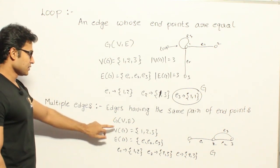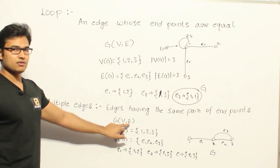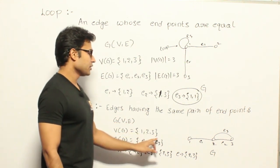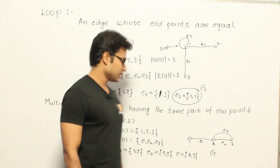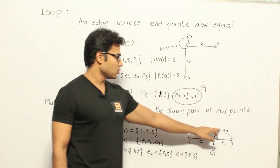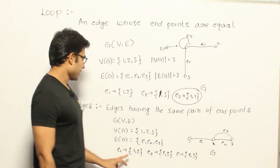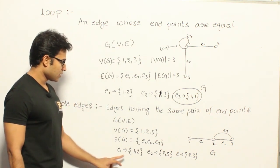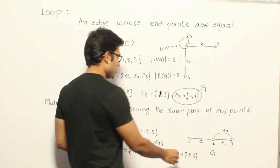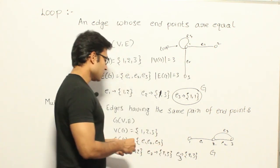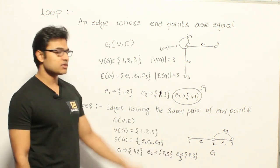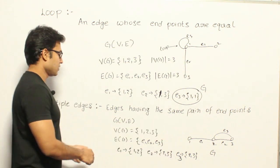In this multigraph example, the vertex set contains vertices 1, 2, 3 and the edge set contains three edges E1, E2, E3. E1 is between 1 and 2, while both E2 and E3 are between 2 and 3. Such a graph is called a multigraph.